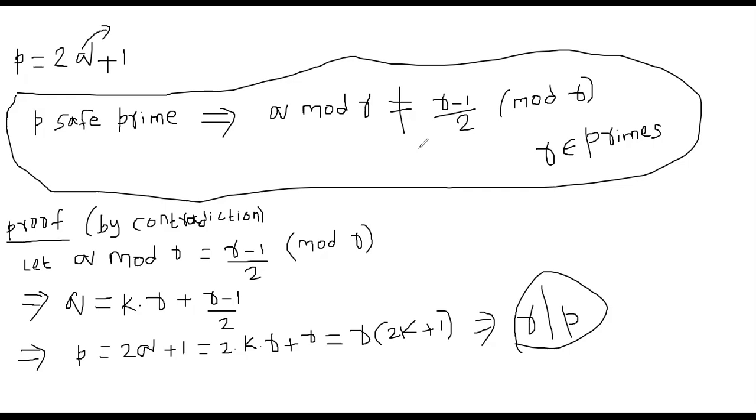So in this paper, he generalized that idea and he considers a sequence of primes. Where is this number R coming from? You could say R is a set of primes from 1 through 2 power 15, for example, or 2 power 16, something like a small list of primes. So why is this an important condition? Why should P being a safe prime imply that Q mod R must not be congruent to R minus 1 by 2 mod R?